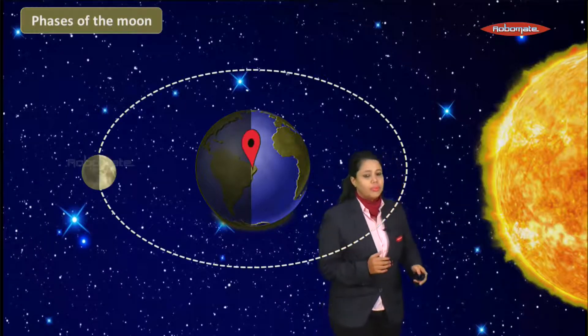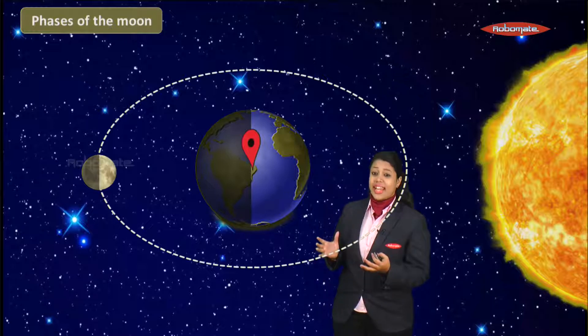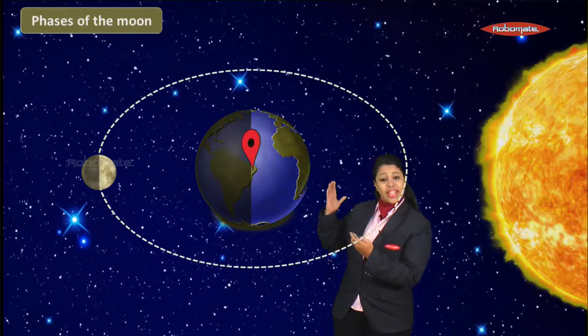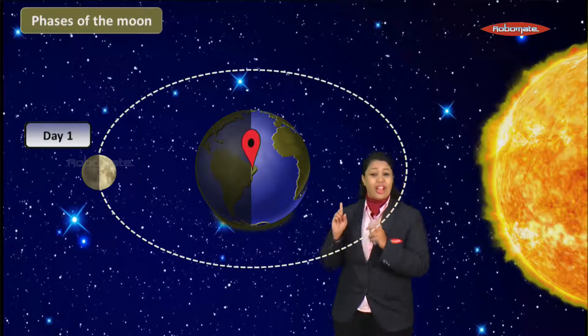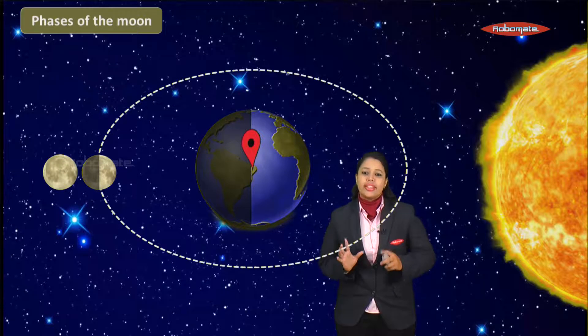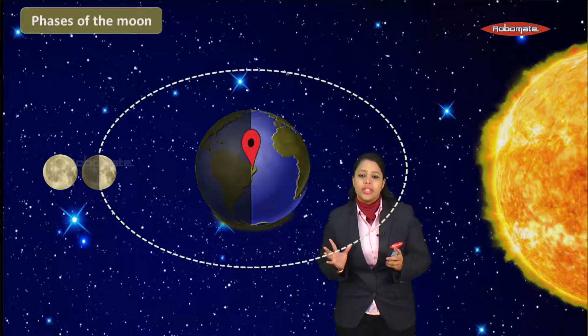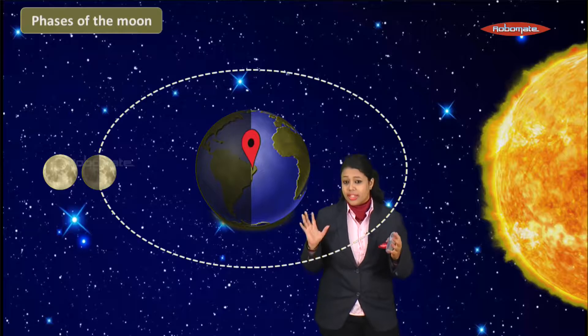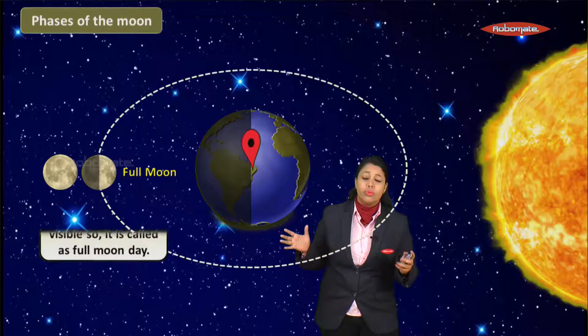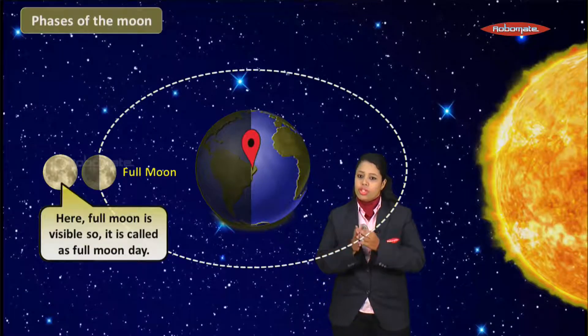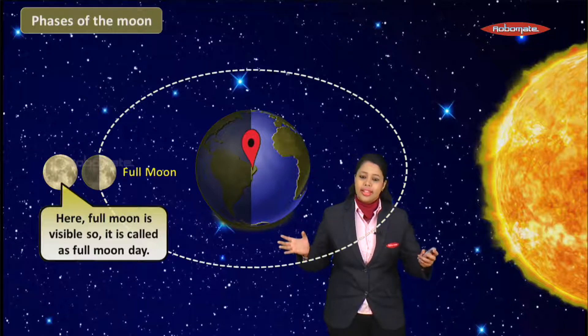We have the Sun, the Earth, and the Moon. Since we can only see one side of the Moon, let's observe from the Earth. On day one, assume the Moon is completely visible to us — we call this a full moon day. This is the actual picture of a full moon, where the Moon is fully visible.